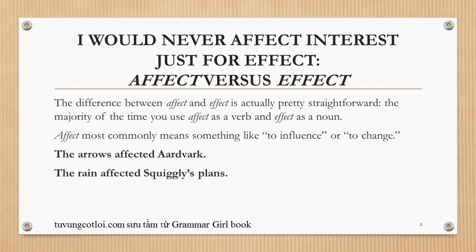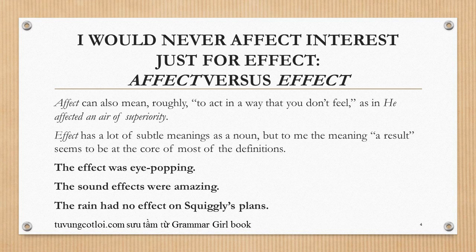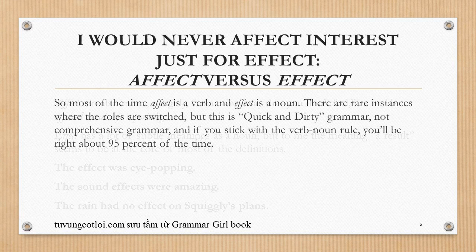The difference between affect and effect is actually pretty straightforward. The majority of the time, you use affect as a verb and effect as a noun. Affect most commonly means something like 'to influence' or 'to change' — for example, 'the arrows affected Aardvark' or 'the rain affected Squiggly's plans.' Affect can also mean roughly 'to act in a way that you don't feel,' as in 'he affected an air of superiority.' Effect, as a noun, has a core meaning of result: 'the effect was eye-popping,' 'the sound effects were amazing,' 'the rain had no effect on Squiggly's plans.'